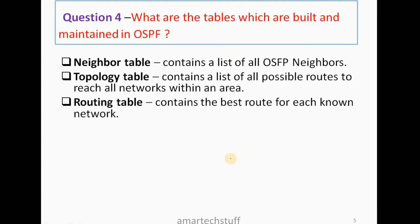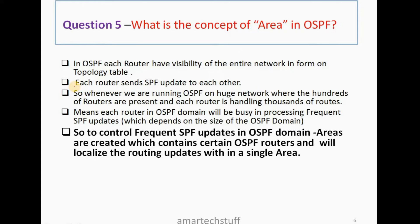Question number four: what are the tables built and maintained in OSPF? There are three tables. First, the topology table, which contains all possible routes to reach all networks within an area. Second, the neighbor table, which is a list of neighbors that an OSPF router has. Third, the routing table, which holds the best route to reach each possible network.